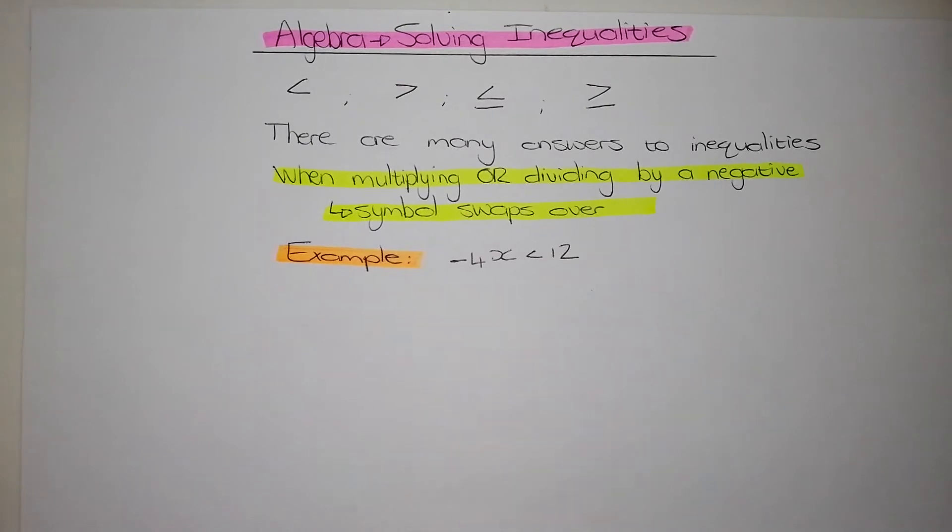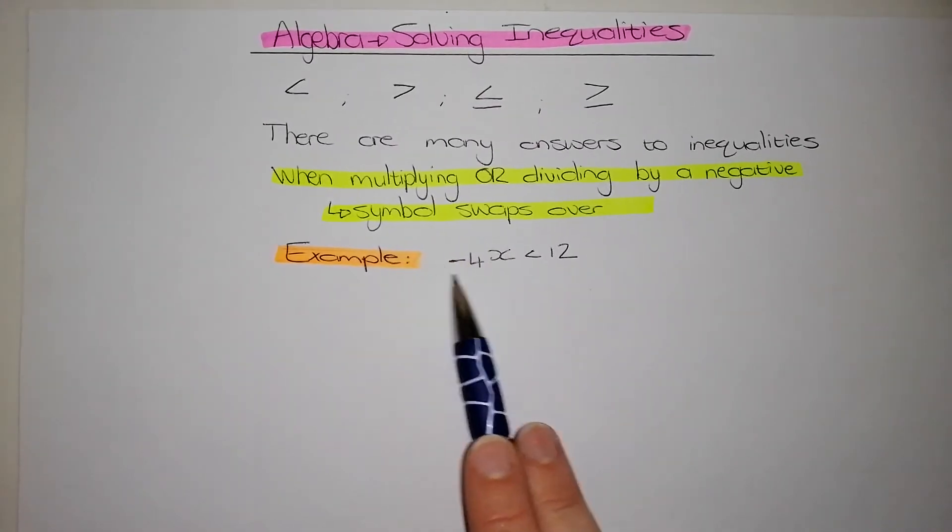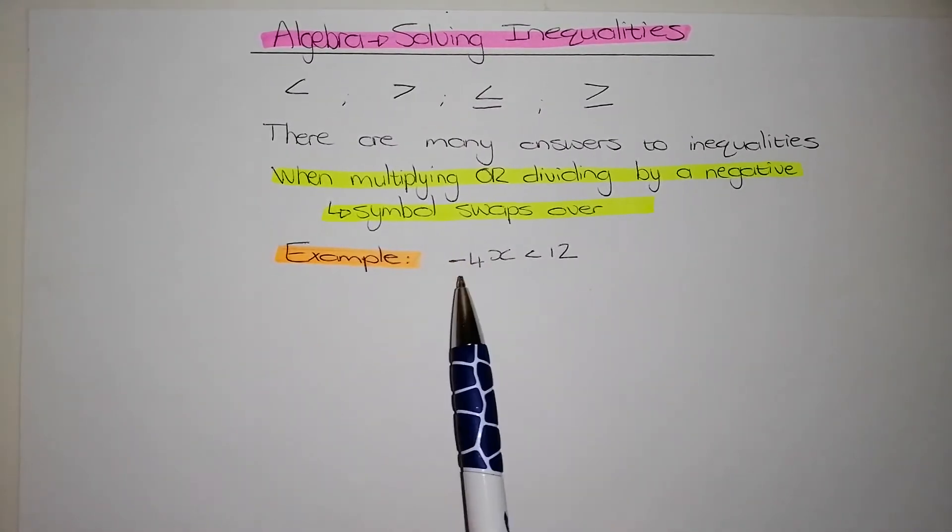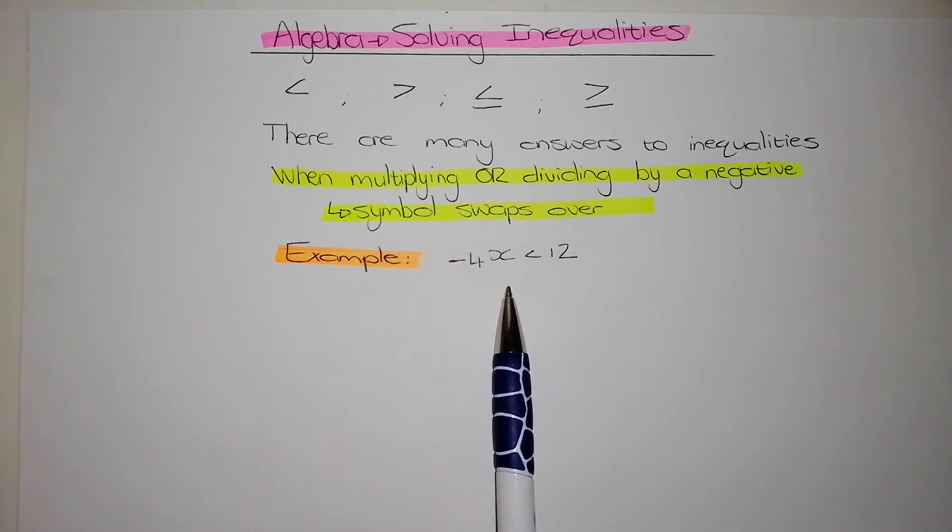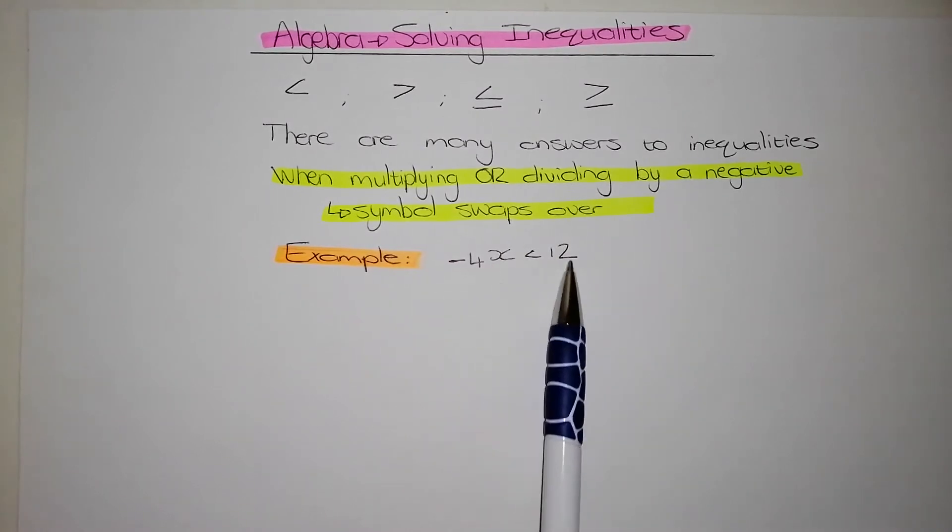So the example we're doing is negative 4x is smaller than 12. So we need to find the value for x where this equation is correct. What we need to do now is we need to get the x alone on one side. Like I said earlier, we need to treat this inequality as an equal sign. So we do exactly the same like we would solving basic algebraic equations.